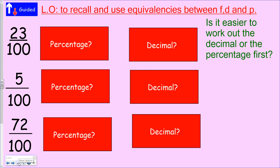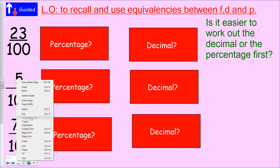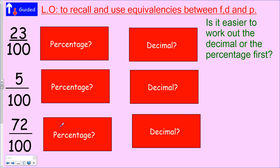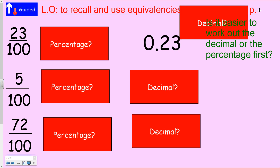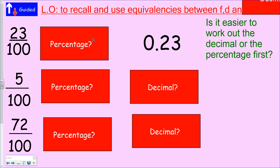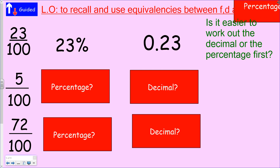These ones are slightly easier. Twenty-three hundredths as a decimal is 0.23, because it has two zeros so it needs two decimal places. How do you write that as a percentage? It already has two decimal places, so it's going to be 23 percent.